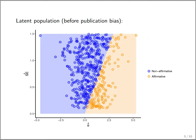To give some visual sense of how this publication process works, here is a funnel plot of simulated data prior to any publication bias. The studies' estimates are color-coded by whether they're affirmative — significant and positive — or non-affirmative, meaning negative or non-significant.